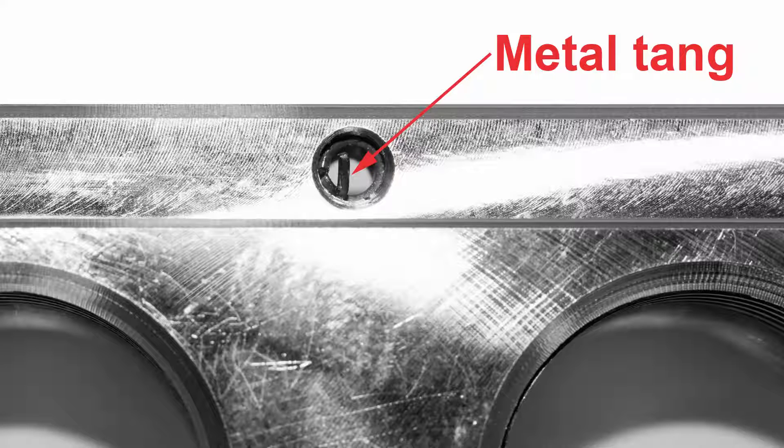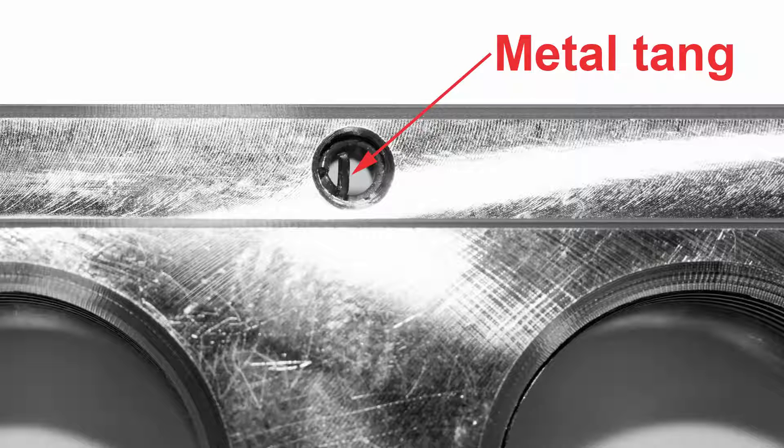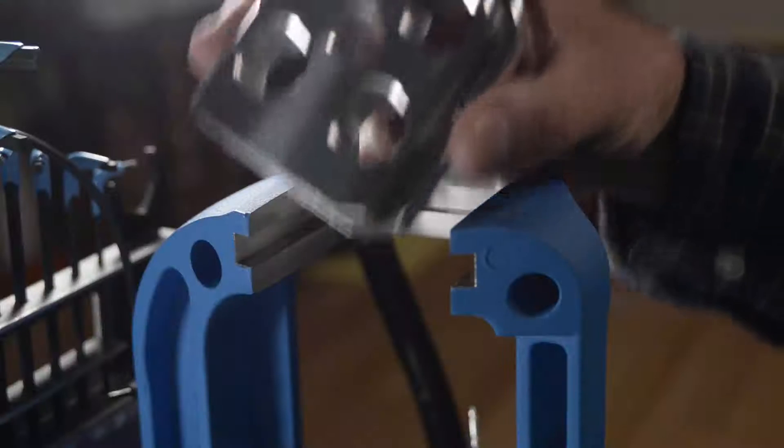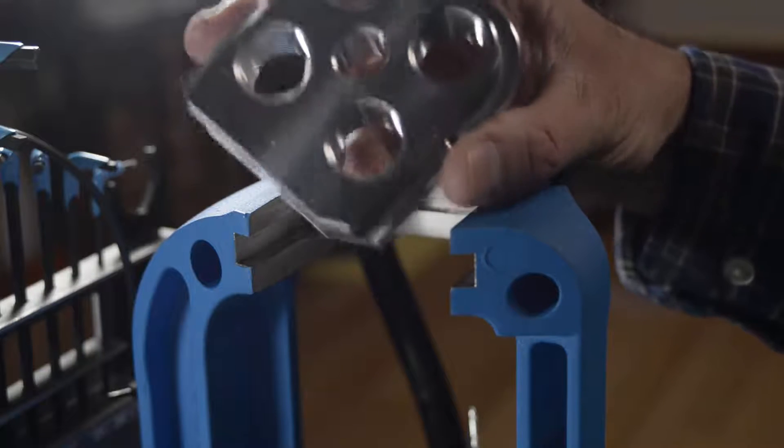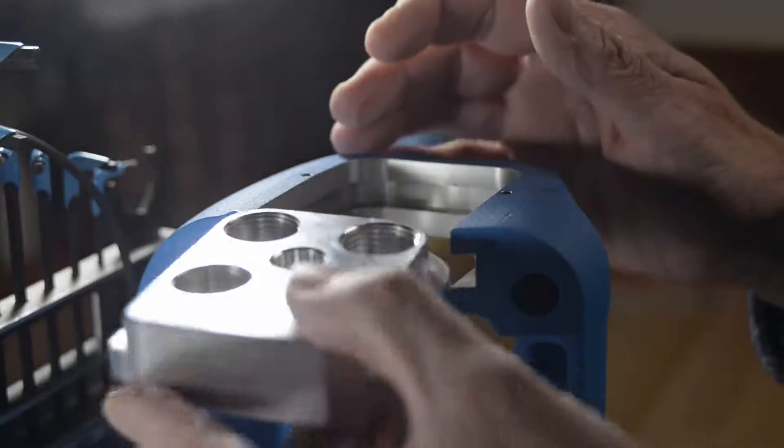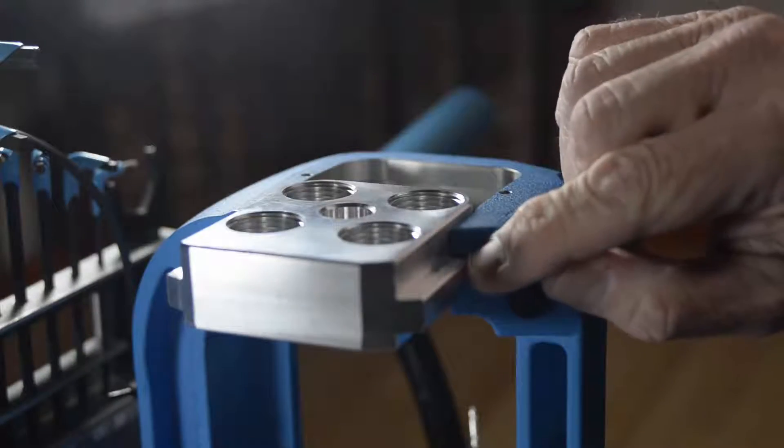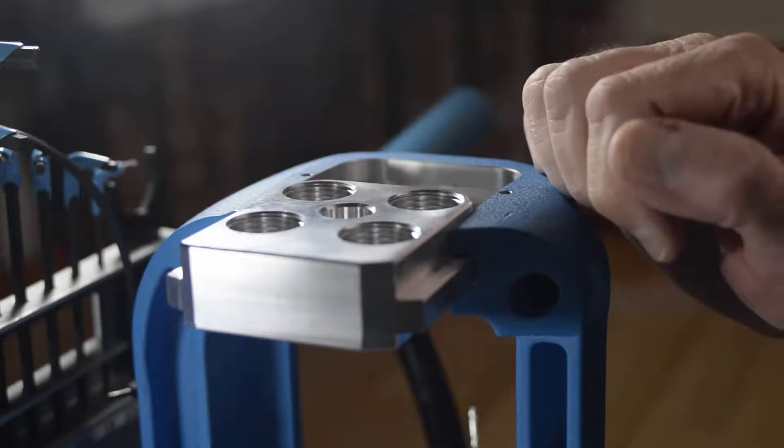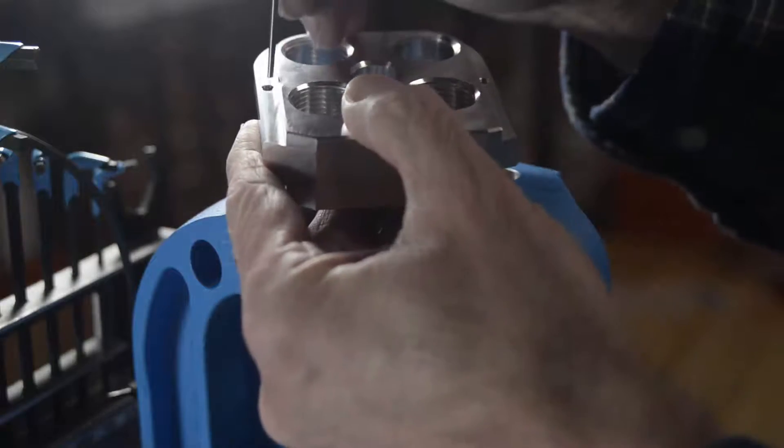Looking at the threaded inserts, you will see a metal tang in each hole. This tang is used by the machine that places the inserts into the tool head. The tangs do not have to be removed, but be careful while inserting the tool head into the press. If there is resistance where the holes enter the press, it may be because the tang is protruding outside the hole. Just use a small metal punch to gently push the tangs back into the hole.